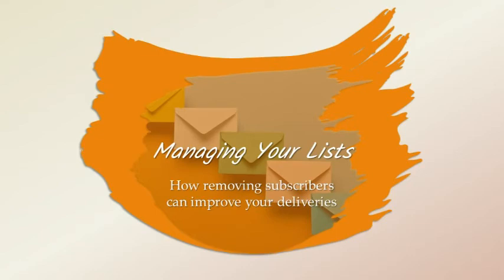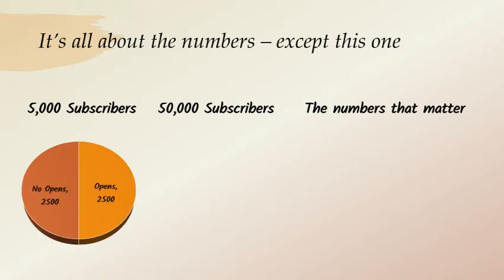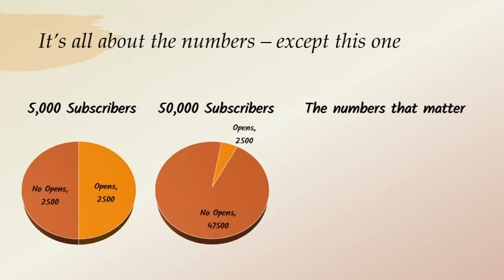In terms of your spam reputation, that number-of-subscribers-as-holy-grail thing will lead you astray. You've got 5,000 subscribers, and if you can get half of them to open your message, that's 2,500 people reading your newsletter. If you've got 50,000 subscribers and you can get 5% of them to open, that's still 2,500 people. But look at the other half of this graph: those 5,000 subscribers gave you 2,500 no-opens, while those 50,000 subscribers gave you 47,000 no-opens. Those 47,000 people will keep your message from landing in the inbox in the first place.